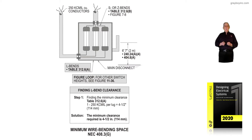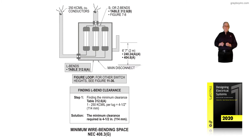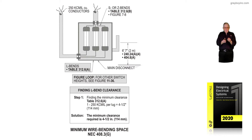Coming in to the bottom of that switch on the load side — or exiting, however you want to say it — we have 250 KC mil conductors bent in an L-bend. Electricians like L-bends because the conductor comes in an L-shape; they can pull it toward them, stab it, and they have more control stabbing an L-bend into the terminal or lug connections they are terminating to.